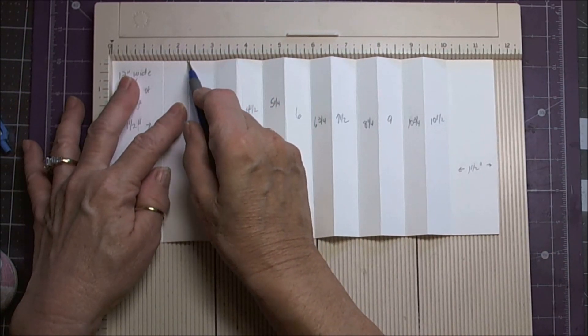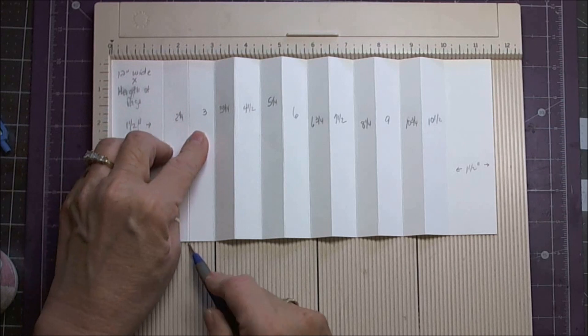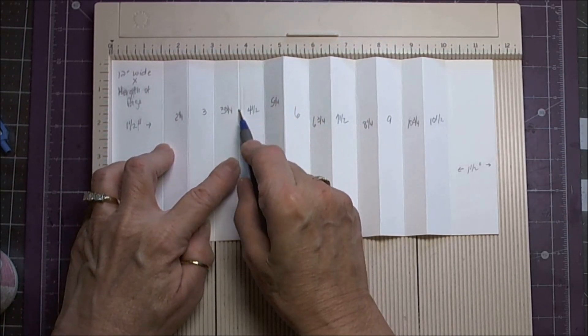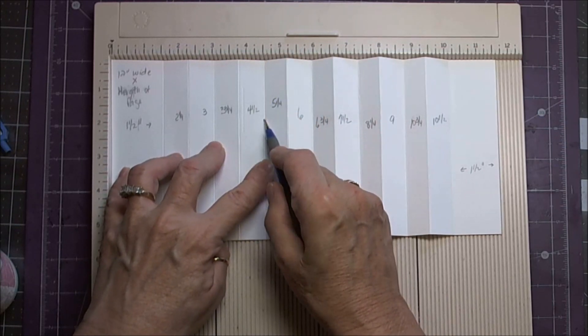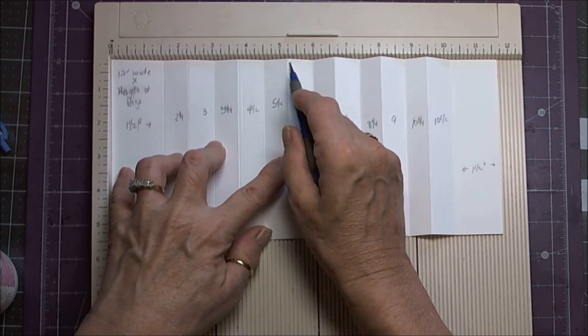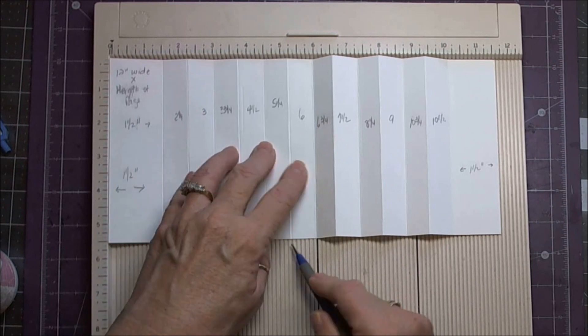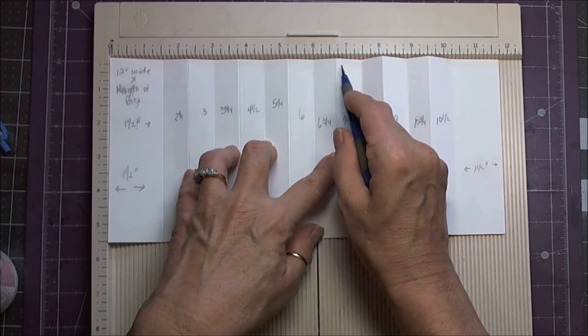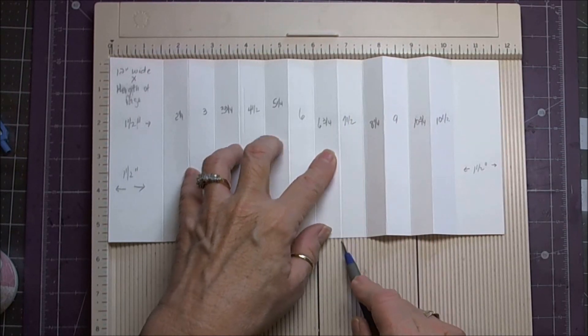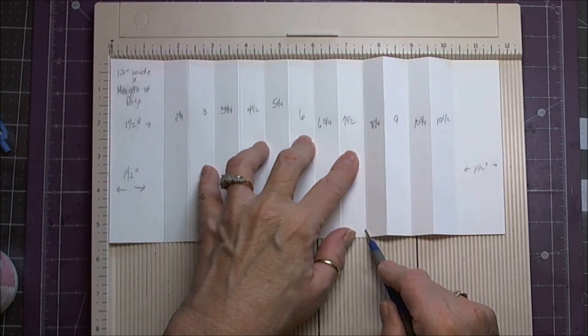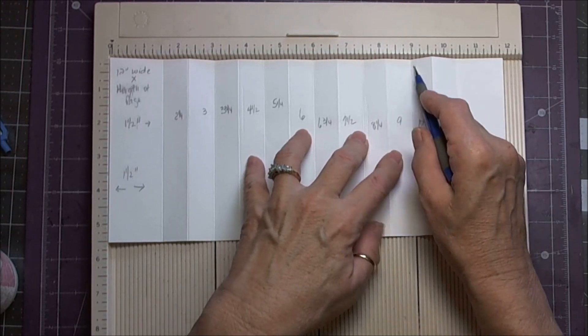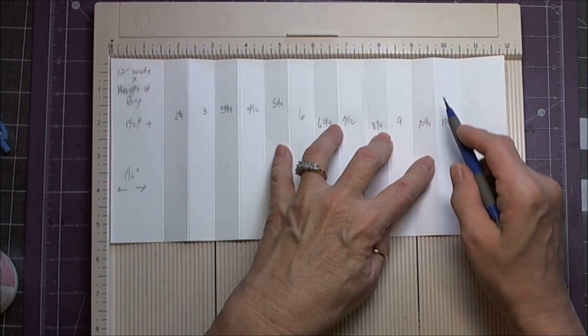Then you're simply going to count and do every three quarters of an inch. So it's going to be two and a quarter, it's going to be three, three and three quarters, four and one half, five and one quarter, six, six and three quarters, seven and one half, eight and one quarter, nine.